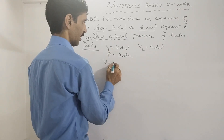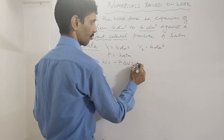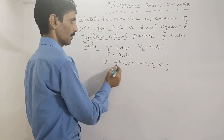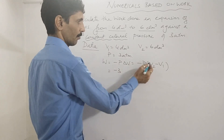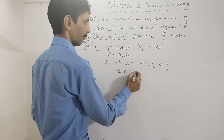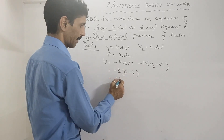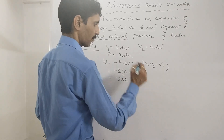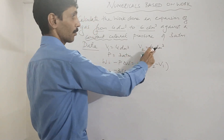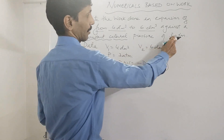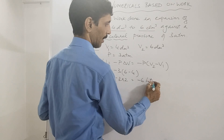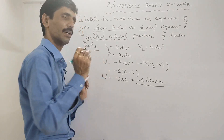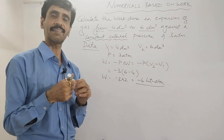So W = −PΔV = −P(V2 − V1) = −3 × (6 − 4) = −3 × 2 = −6. The unit of dm³ is liters and the unit of pressure is atmospheres, so the unit becomes liter·atmosphere. Therefore W = −6 liter·atmosphere.